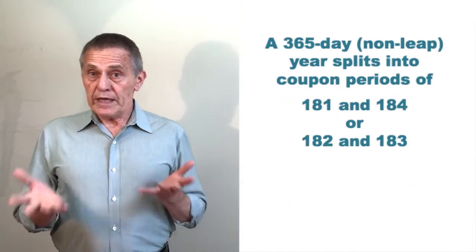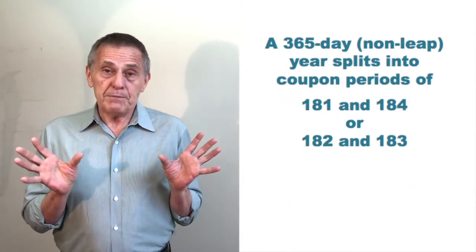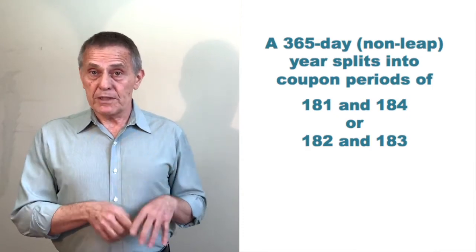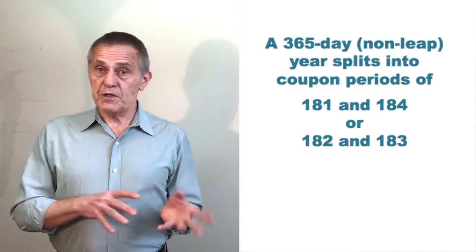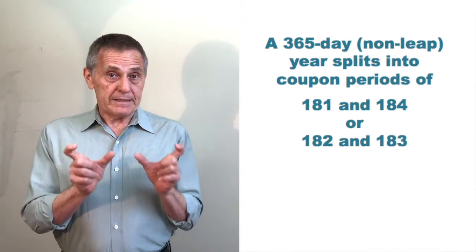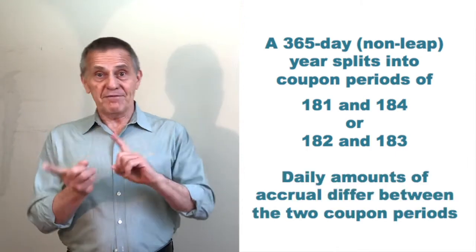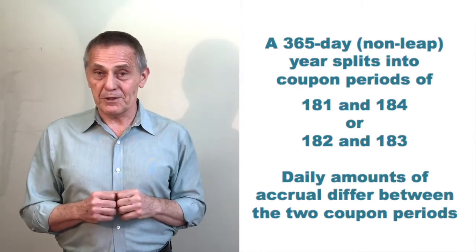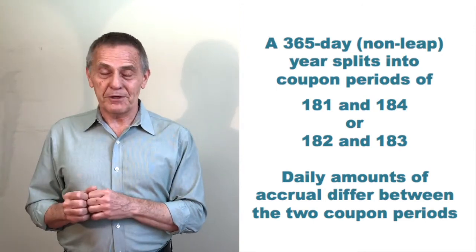So when you're looking at a typical treasury bond or note, the non-leap year has a length of 365 days, but the coupon period is split between 181 and 184 most of the time, although for some issues they'll split 182 and 183. But that means the length of the two coupon periods is different, so in the different halves of the year, you're generating interest at a slightly higher daily rate in the short coupon period and interest at a slightly lower daily rate in the long coupon period.